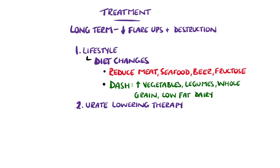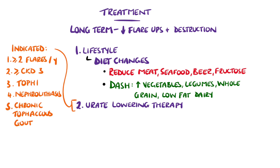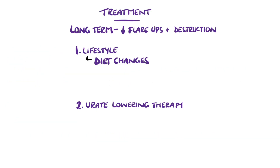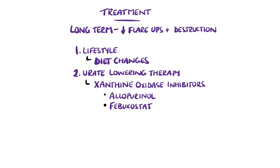Urate lowering therapy is indicated in cases where there are two or more gout flares per year, chronic kidney disease stage 3 or higher, the presence of tophi, a history of urolithiasis, or chronic gout with tophi. It's not recommended in asymptomatic hyperuricemia or in people with rare gout flares. Xanthine oxidase inhibitors are first line, like allopurinol, with febuxostat being another option, as these prevent the overall conversion of hypoxanthine and xanthine to uric acid, which is part of the purine metabolism pathway.